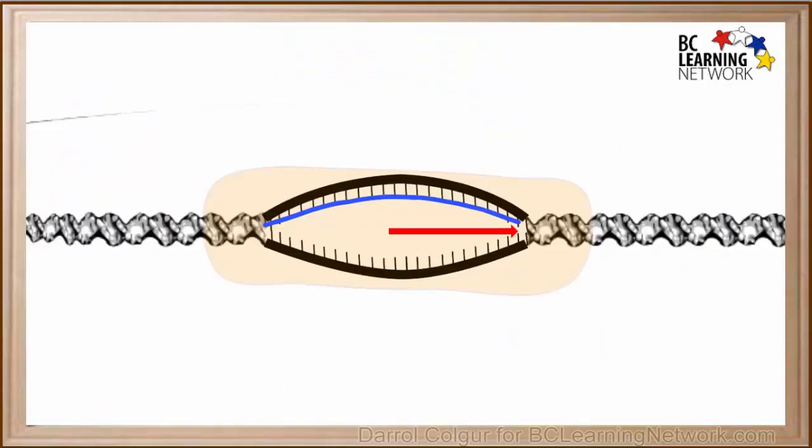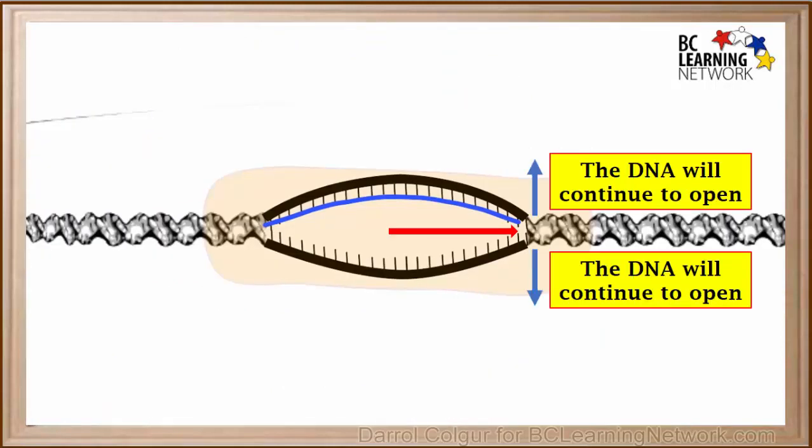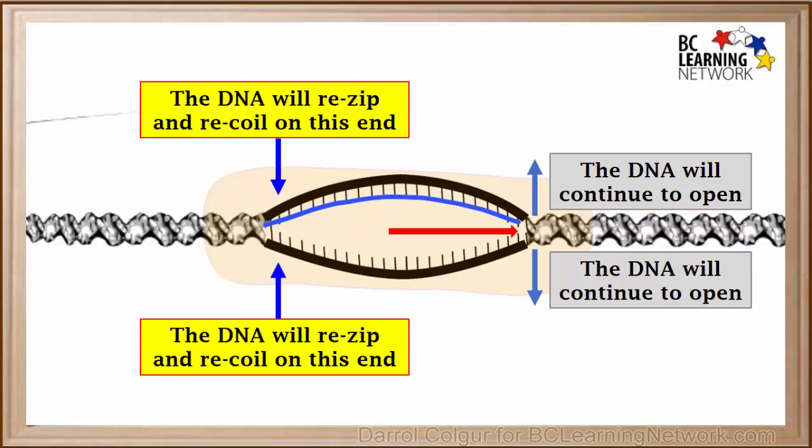Now we'll go back to the simpler model. The RNA polymerase will continue to unwind and unzip the DNA on the leading side. While on this side, the DNA has been used to make the mRNA so it will re-zip and recoil as the bubble moves to the right.